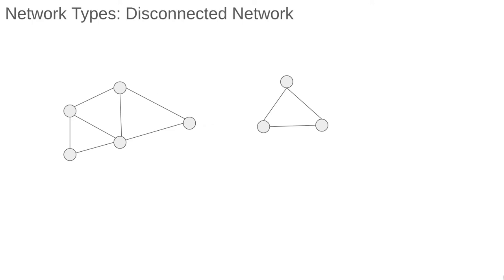It would split into two components. It would then be no longer possible to travel from the left component to the right component by following links in the network. We have a single network now made of two distinct pieces, and this is called a disconnected network.